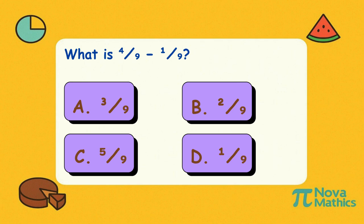What is four-ninths minus one-ninth? Is it A, three-ninths, B, two-ninths, C, five-ninths, or D, one-ninth?